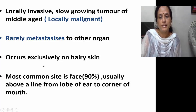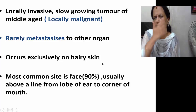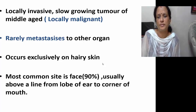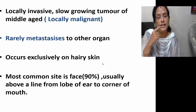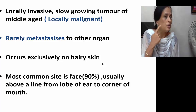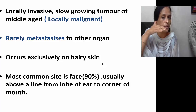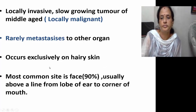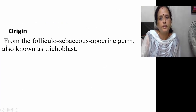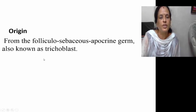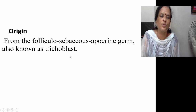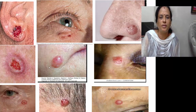Basal cell carcinoma occurs exclusively on hairy skin. Most of them — about 90% — occur on the face. They occur above a line joining the angle of the mouth to the lobule of the ear. Just draw a line there — these tumors occur most commonly above this line. The origin is from the basal cells of the pilosebaceous unit, also known as folliculosebaceous apocrine germ cells, also referred to as trichoblasts.